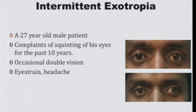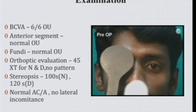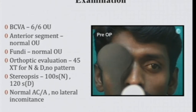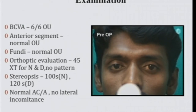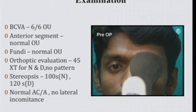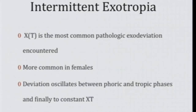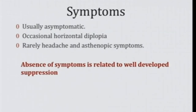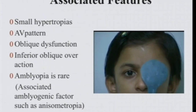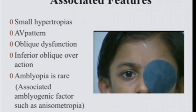Intermittent exotropia: the patient looks normal but when you break fusion, the eye takes up an exotropia. It is usually latent but over time becomes manifest. In adults with asthenopic complaints, proceed to surgery. In children, you can wait and watch if stereopsis is maintained well. Typically, the history is that when the child is daydreaming, tired, or has fever, the squint manifests.